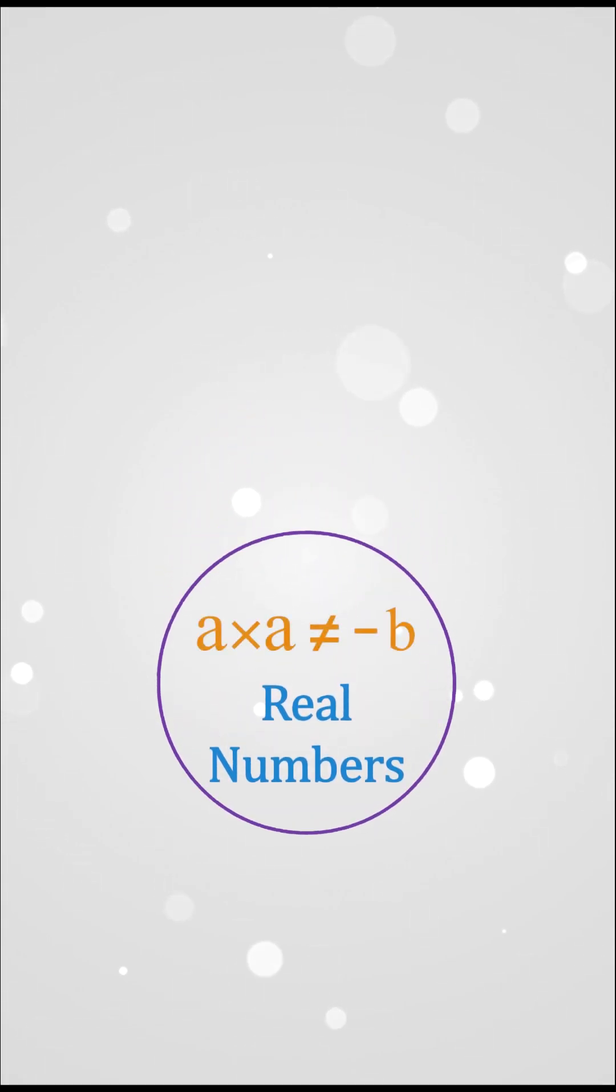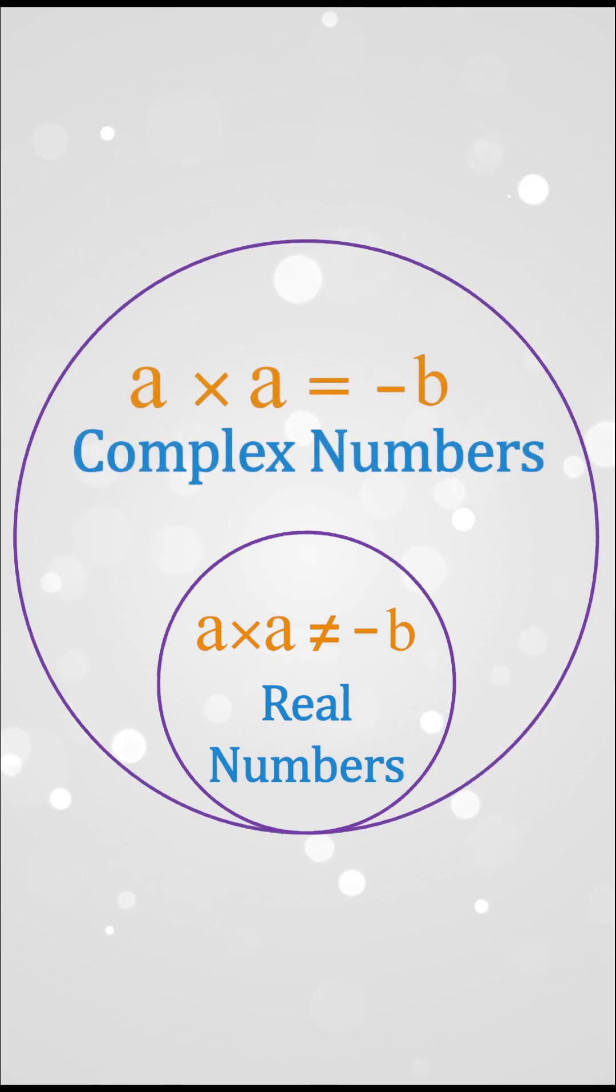Proof is even a times a equals minus b was undefined once. But 200 years back, imaginary numbers were officially accepted, giving the solution to a times a equals minus b.